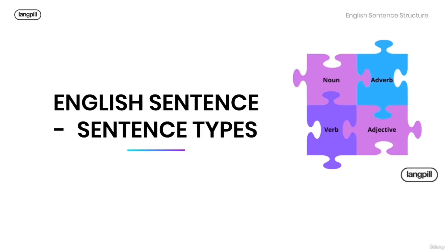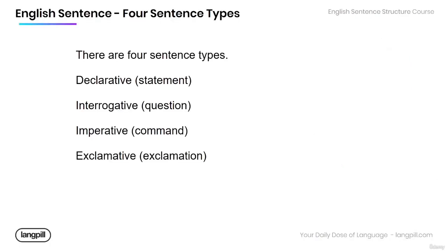In this lesson, we'll cover the different types of sentences in the English language. In English, we can use four different types of sentences: the declarative sentence, which is known as a statement; the interrogative sentence, which is a question; the imperative sentence, which is a command; and the exclamative sentence, which is an exclamation.